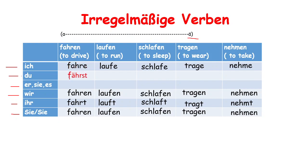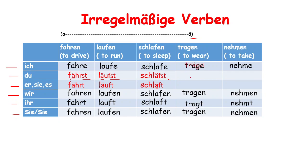With du, we get 'ä' plus -st, and with er/sie/es, we get 'ä' plus -t only. The same pattern applies to laufen (läufst, läuft), schlagen (schlägst, schlägt), and similar verbs — 'a' with umlaut and -st for du, 'a' with umlaut for er/sie/es.